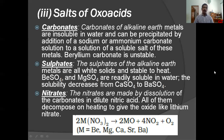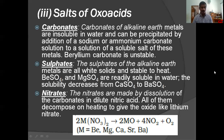Alkaline earth metals form carbonates. Carbonates of alkaline earth metals are insoluble in water and can be precipitated by addition of sodium or ammonium carbonate solution to a solution of a soluble salt of these metals. Beryllium carbonate is unstable and decomposes on heating. Alkaline earth metal carbonates also decompose on strong heating, but alkaline metal carbonates are stable and will not decompose.